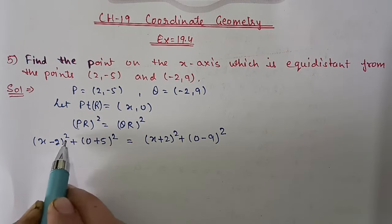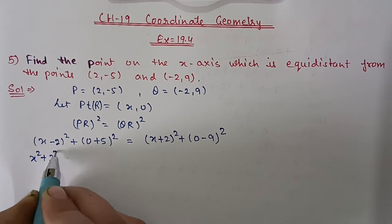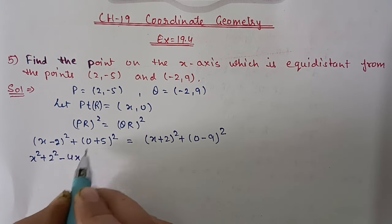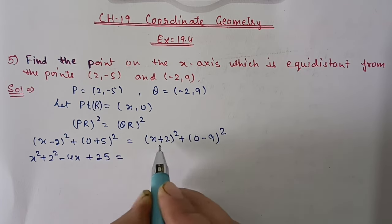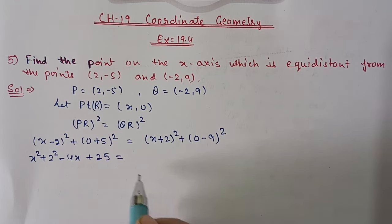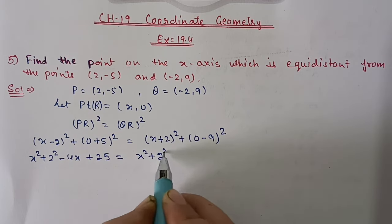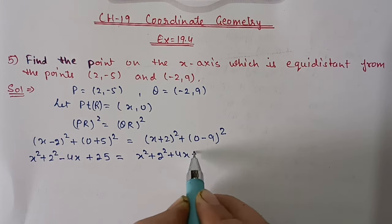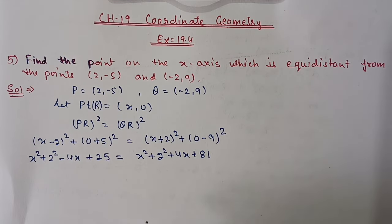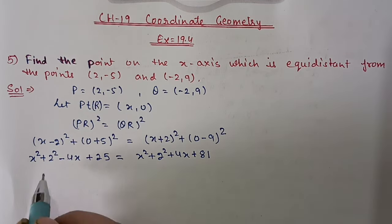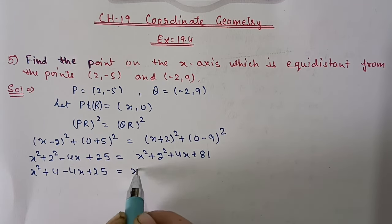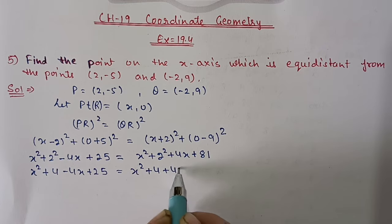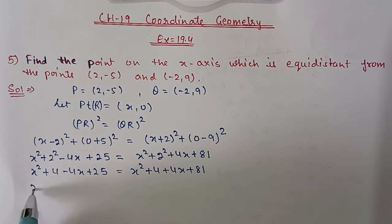Applying the (a - b)² formula: a² + b² - 2ab. Here (0 + 5) = 5 and 5² = 25. For the right side, apply the (a + b)² formula: a² + b² + 2ab. And (-9)² = 81. Shifting variables to one side and numbers to the other, we simplify: x² + 4 - 4x + 25 = x² + 4 + 4x + 81.